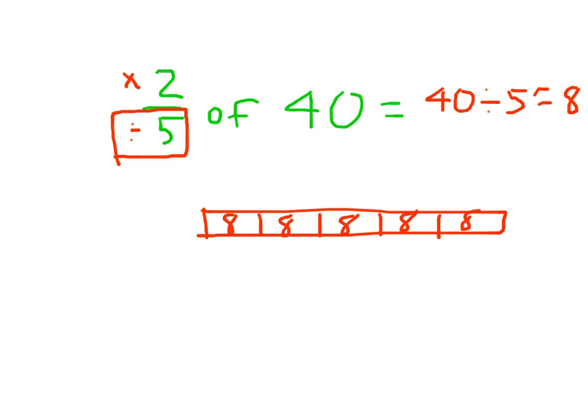And then it says to multiply by 2. What it means is for 2 fifths, we're looking at 2 out of those 5 parts. And that's why this is 8 times 2, which equals 16. So again, this is 2 out of those 5 parts that we looked at there.